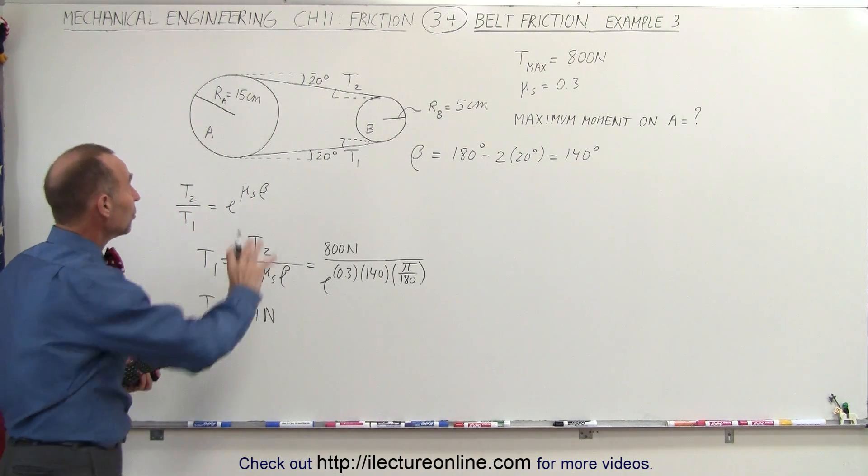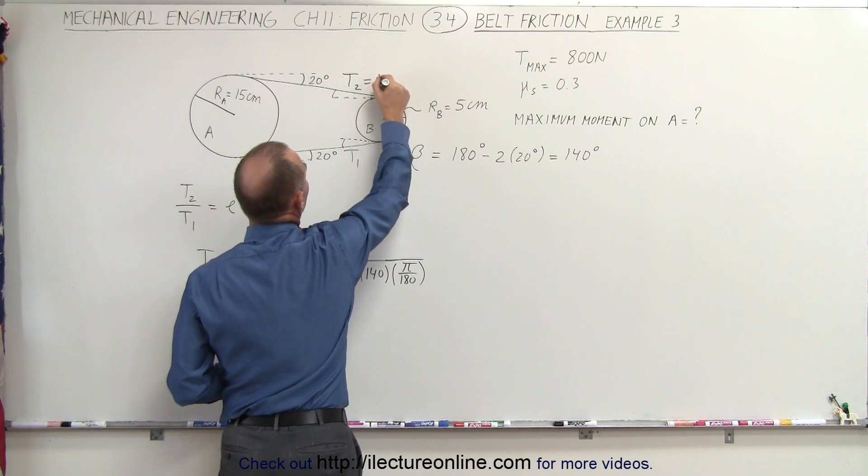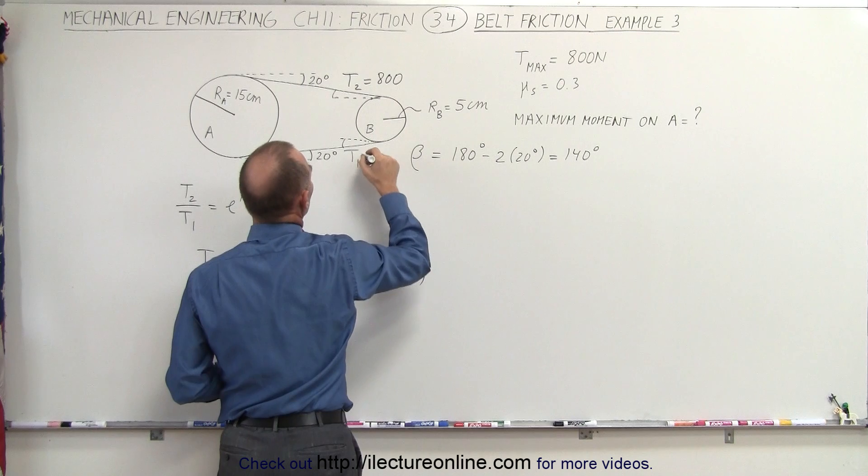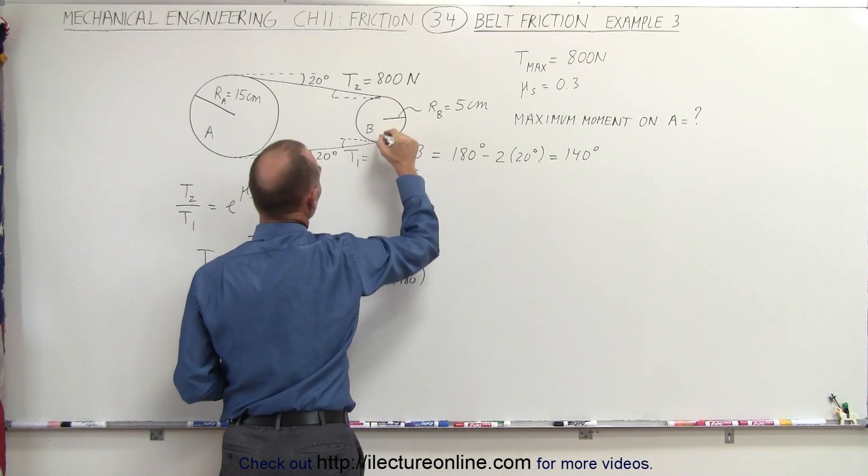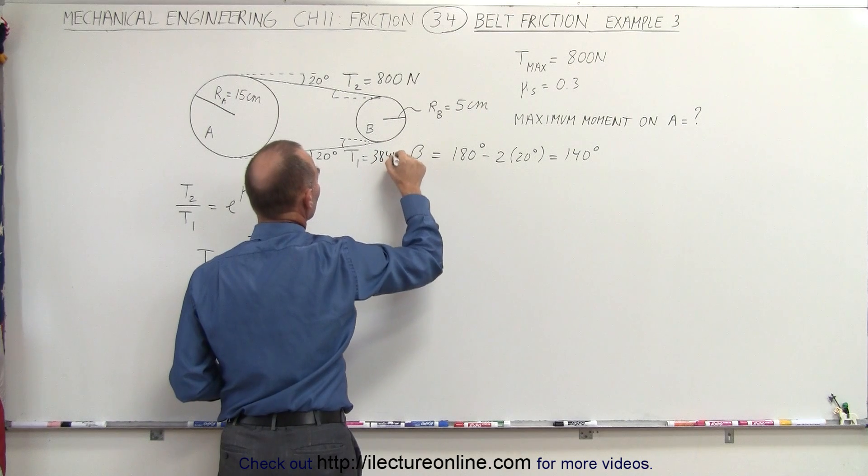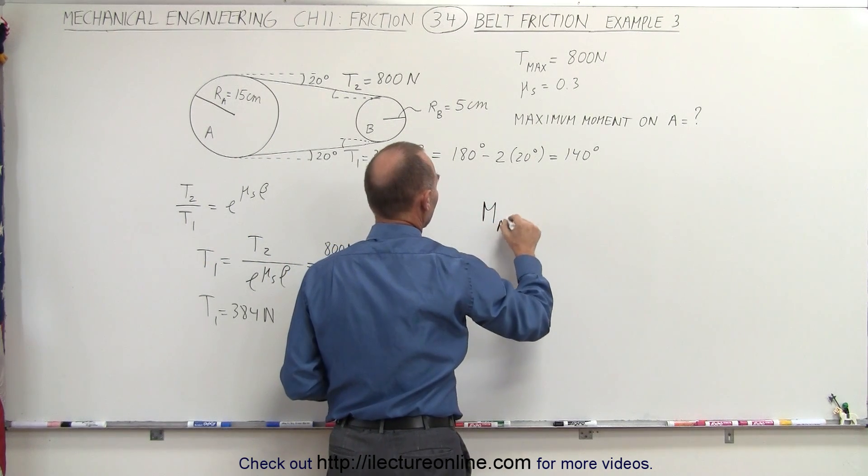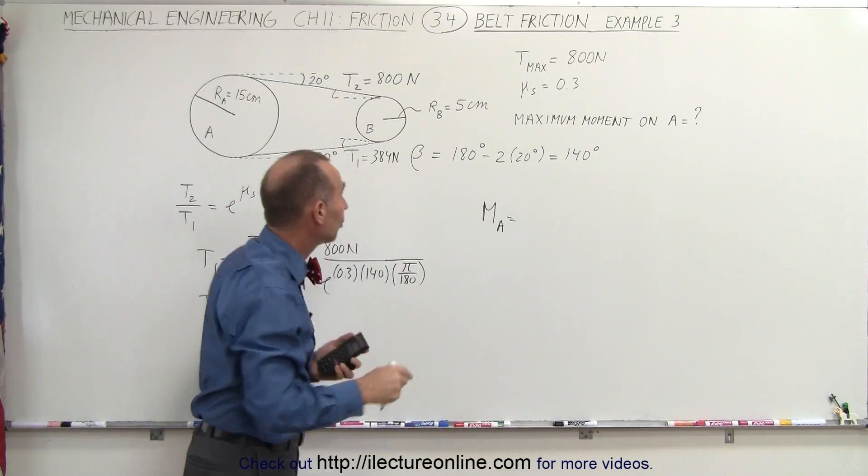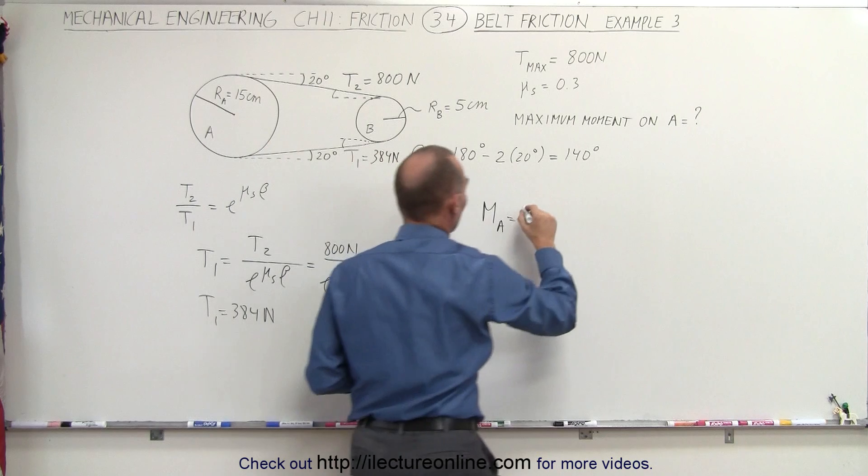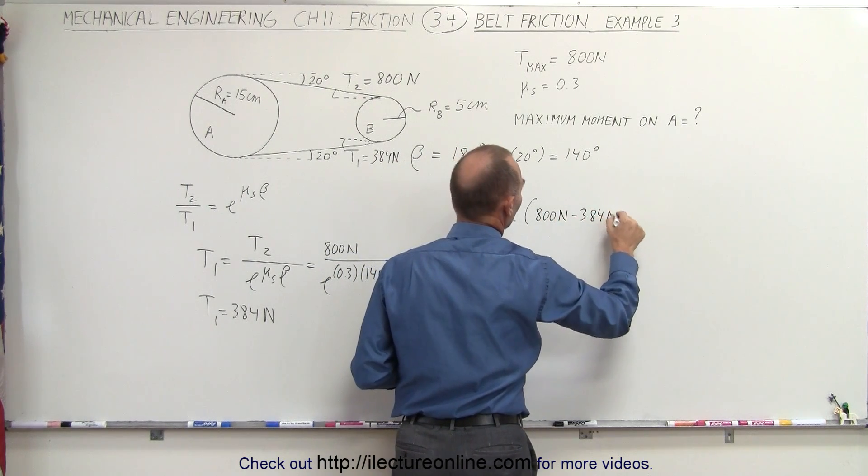Now we're ready to calculate the moment we can apply to A. Notice that the tension here is equal to 800 newtons, and the tension here is equal to 384 newtons. So the moment on A is equal to the net tension on that, which would be 800 minus 384, 800 minus 384 newtons.